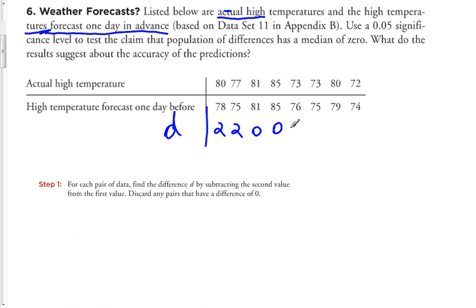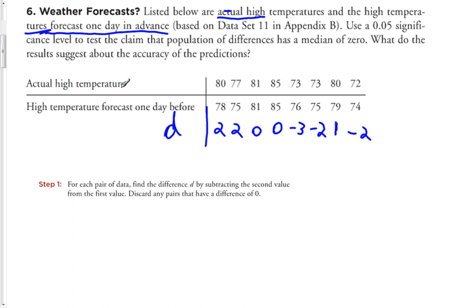Continuing: 73 and 76 give a difference of negative three. 73 and 75 give negative two. 80 and 79 give a difference of one. And 72 and 74 give negative two as the difference. So here are our differences — that is step one.